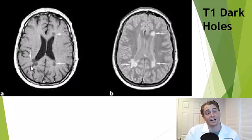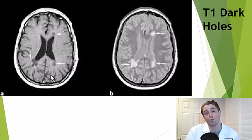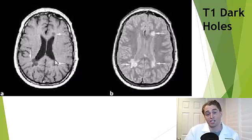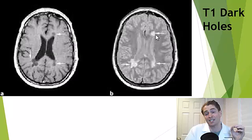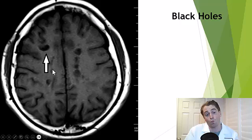Most people with MS are going to have some black holes, but when they're very extensive, especially when accompanied by atrophy, that's correlated with more disability — more so than just the T2 lesion burden. This is another example of subcortical T1 black holes.